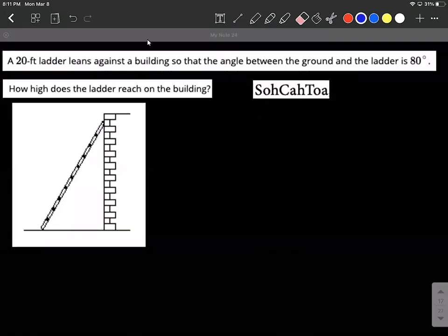In this example, we have a mathematical modeling problem, meaning a word problem where we're going to use a right triangle to help us solve this. We have a 20-foot long ladder that leans against the building so that the angle between the ground and the ladder is 80 degrees. How high does the ladder reach on the building?